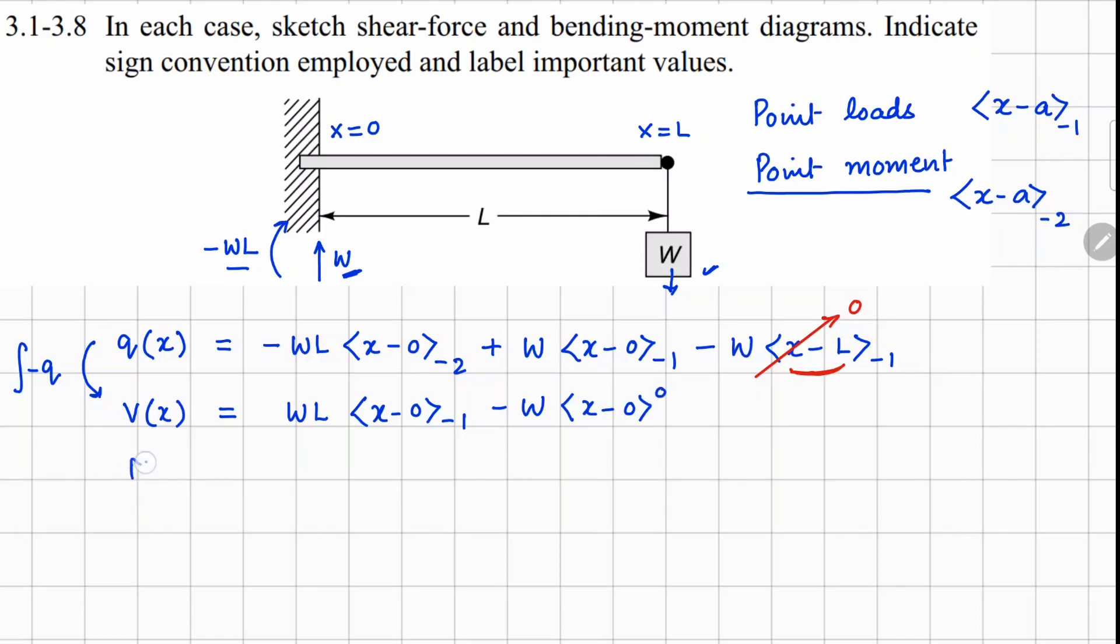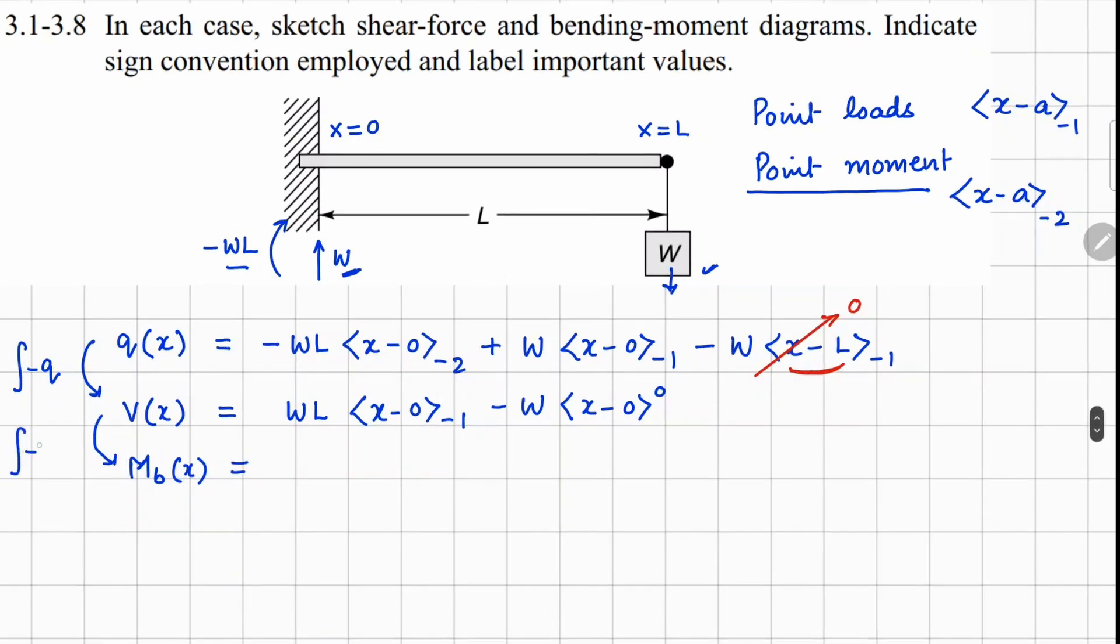Next step, your bending moment M(x). One more time, from here to here we are going to integrate your V with a minus sign. So again this becomes minus WL(x minus 0). Minus 1 becomes 0, so it goes on top. Change of sign, so it becomes plus W(x minus 0). Power 0 becomes plus 1 there.